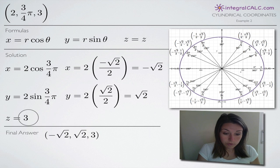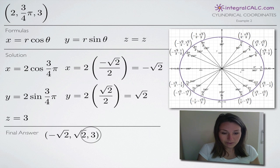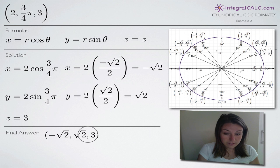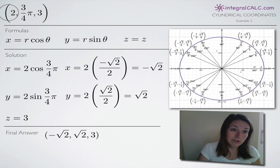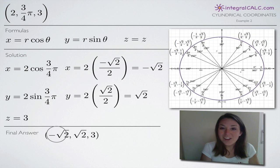Putting those three together, our final answer is negative square root of 2, square root of 2, and 3. Those rectangular coordinates are exactly equal to the cylindrical coordinates we started with. I hope that helped, and I'll see you in the next video!